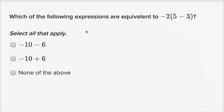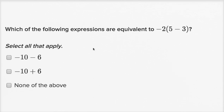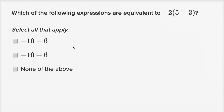These exercises are all from Khan Academy. This first one says: which of the following expressions are equivalent to negative two times the quantity five minus three? Now you could just figure out that five minus three is two, multiply that times negative two, and get negative four, and see which of these equals negative four. But the whole point of this video is to understand that maybe I could apply the distributive property here.